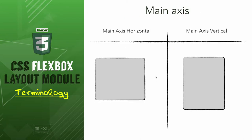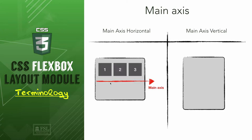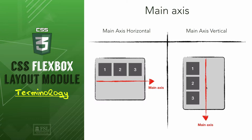To distribute elements, Flexbox uses the main axis, which is responsible for laying out items horizontally or vertically. Once we set the main axis to be horizontal, the items will follow its direction. If we set the main axis to be vertical, the elements will lay out vertically. So the distribution of items relies primarily on the main axis alignment.